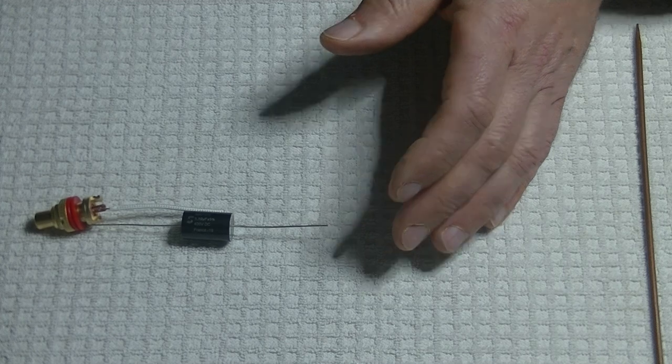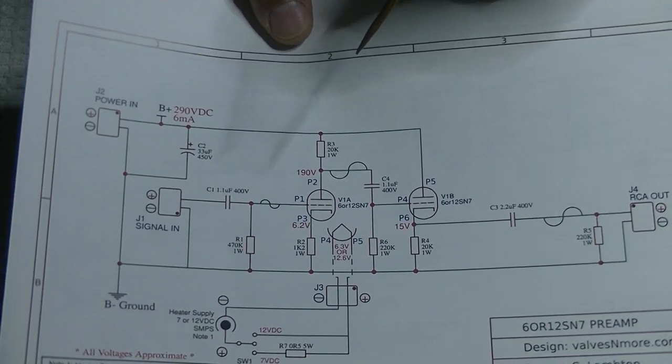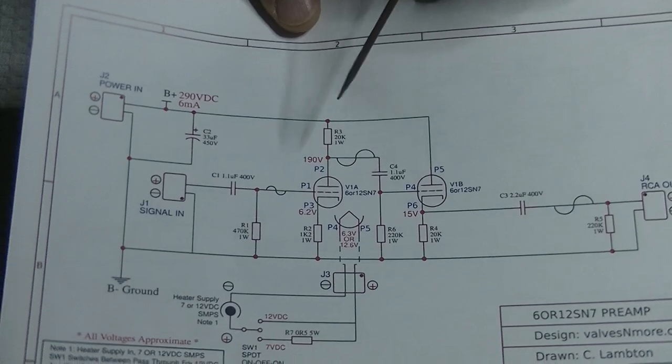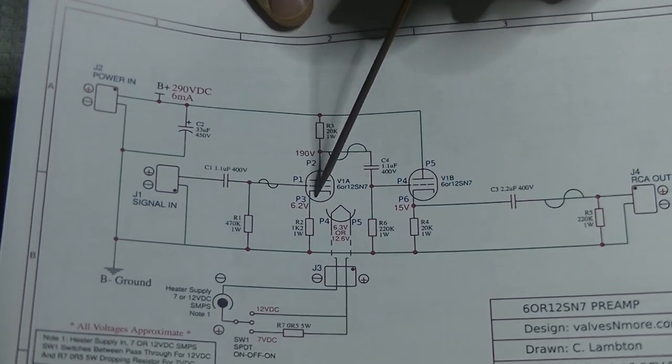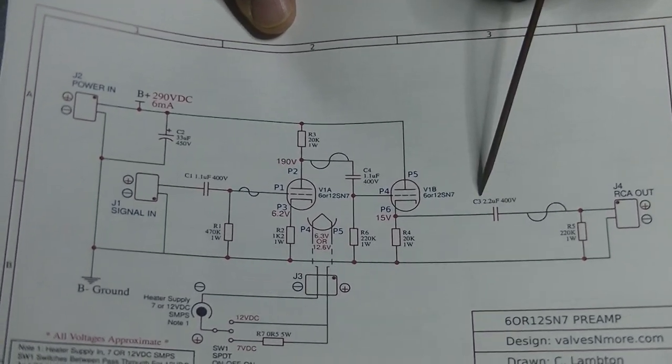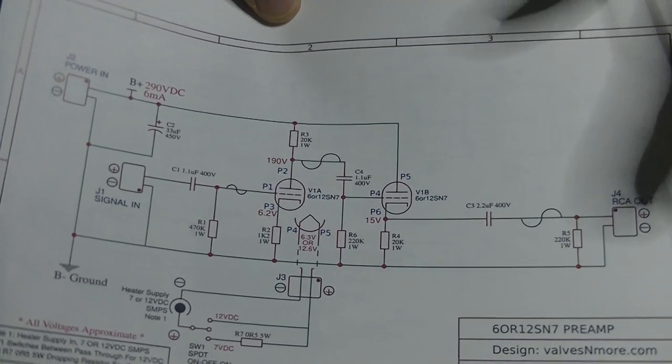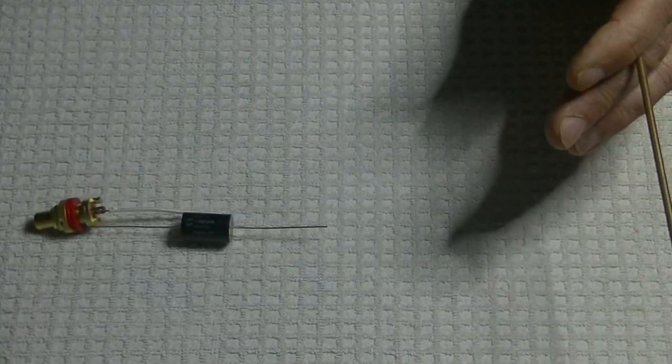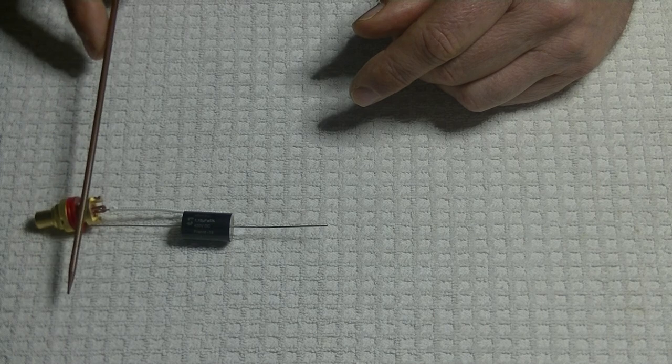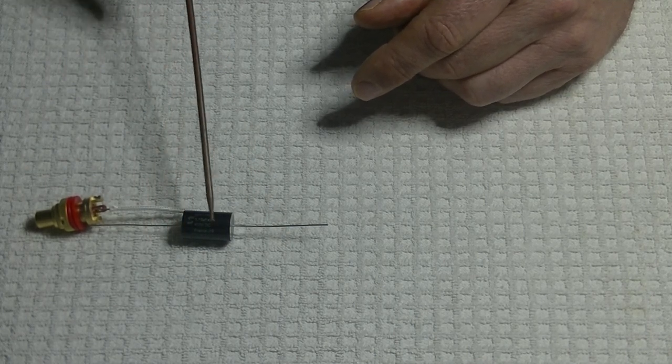In this case, I'm using Solen black fast caps. This is 1.1 microfarad at 400 volts. Basically, if your voltage is a little bit more than you need, or even twice as much, it doesn't matter. As long as you cover your voltage rating, you're good. What you want with a coupling capacitor is nothing. You want it just to pass the signal through cleanly without coloring it, without changing the EQ. That's what these fast caps do.